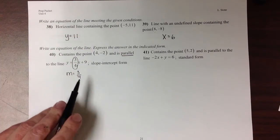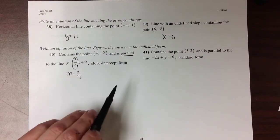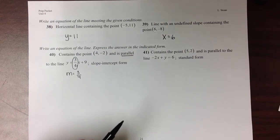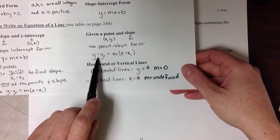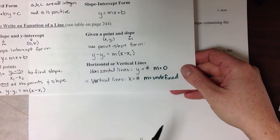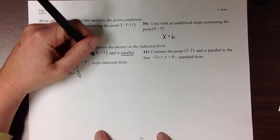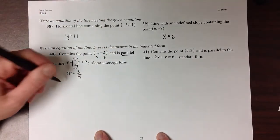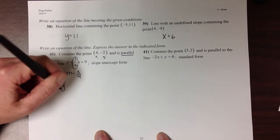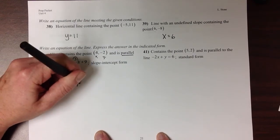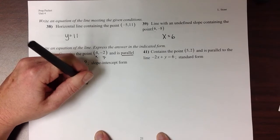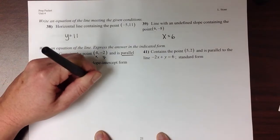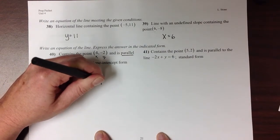So since we're given a slope and a point to start with, we'll use the point-slope formula to start our equation. So here is our x1 and our y1. So we write y minus a negative 2 equals 3/4 times x minus 4.